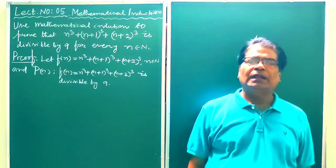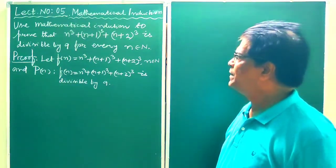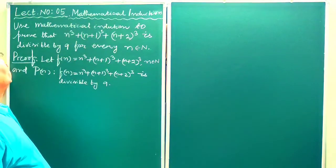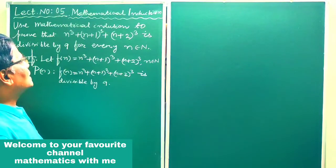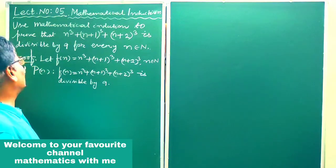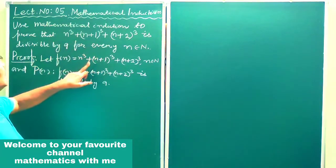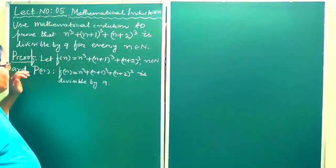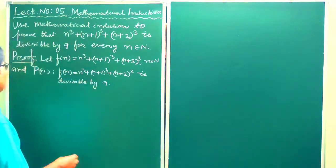Hello students, welcome to my channel. In this class I am going to solve a new type of problem using mathematical induction. The question is: use mathematical induction to prove that n³ + (n+1)³ + (n+2)³ is divisible by 9 for every n belonging to the set of natural numbers N. In order to prove this, let f(n) = n³ + (n+1)³ + (n+2)³, and let P(n) stand for the statement that f(n) is divisible by 9.